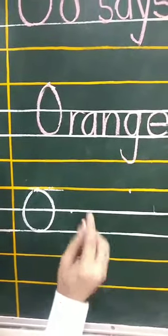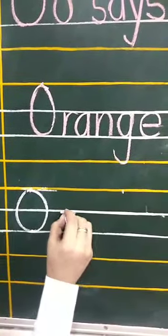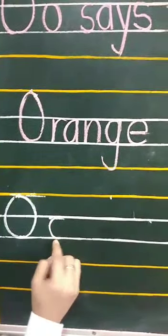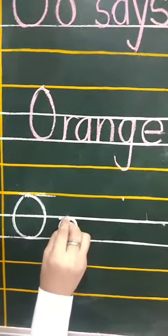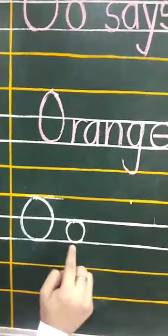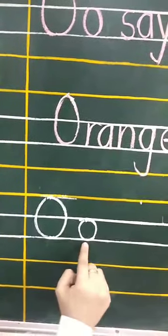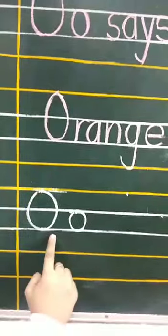And in small letter O, you have to start from the middle line. Make a curve like seeker cat. Then go up and touch to the dot. What is this? Small letter O. Capital letter O. Small letter O. Oh, oh, oh.